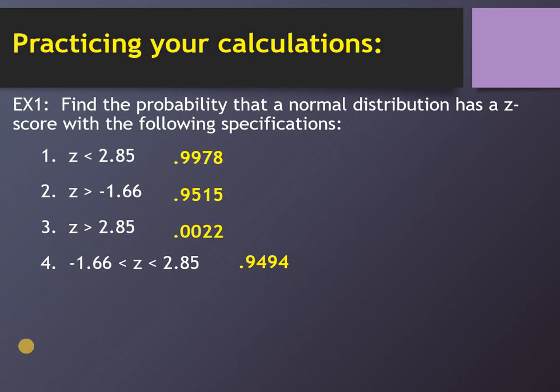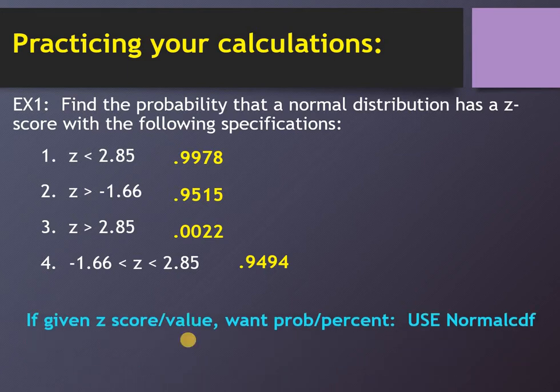For this problem here, for 4, yeah. So for 4, this is your lower number, the negative 1.66 and the upper number is 2.85. You would do lower is negative 9999999999999. Upper is 2.35. Alright. So if you're given a z-score or a specific value, and I can't say this often enough, if you are given a value or a z-score, the command you use is normal CDF. If you are given a probability or percentile and I want a z-score, what do you think you're going to do? So inverse normal because an inverse is what takes you back.